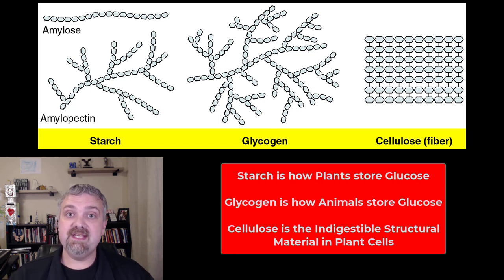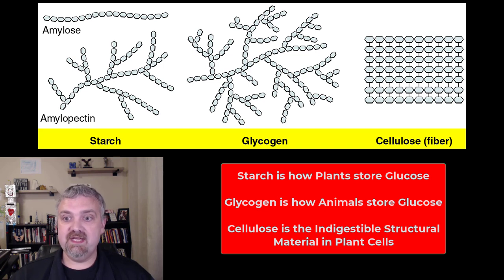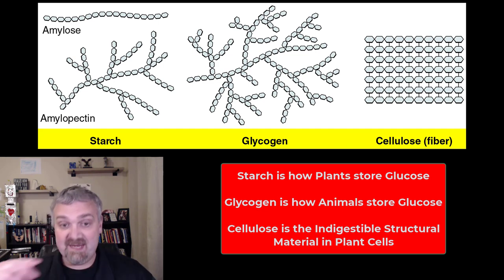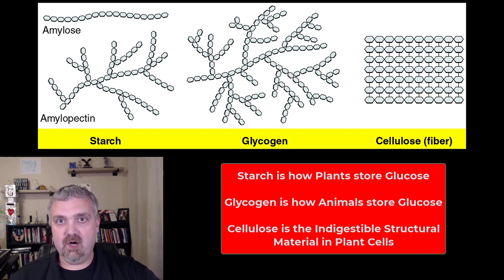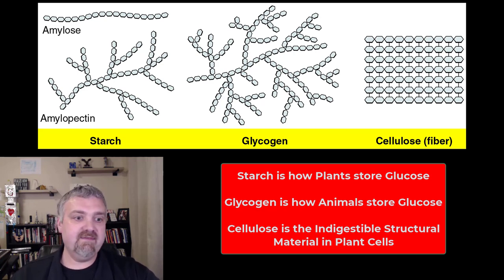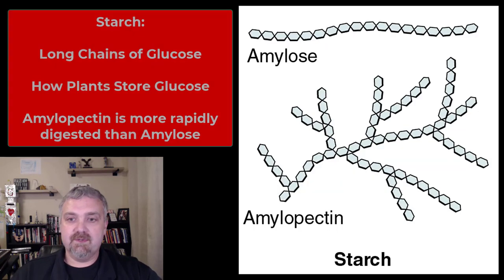Just a real quick overview: starch is how plants store carb energy. Glycogen is how animals like humans store carb energy, and cellulose or fiber is going to be your undigestible or indigestible carbohydrates or polysaccharides. So let's dive in and look at all three.